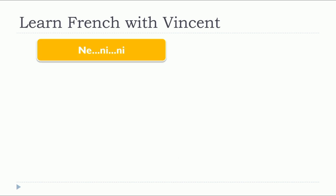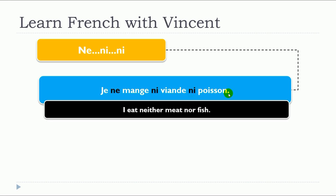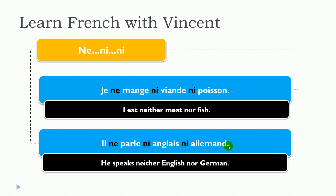Let's see some examples of ne...ni...ni. Je ne mange ni viande ni poisson — I eat neither meat nor fish. Il ne parle ni anglais ni allemand — He speaks neither English nor German.